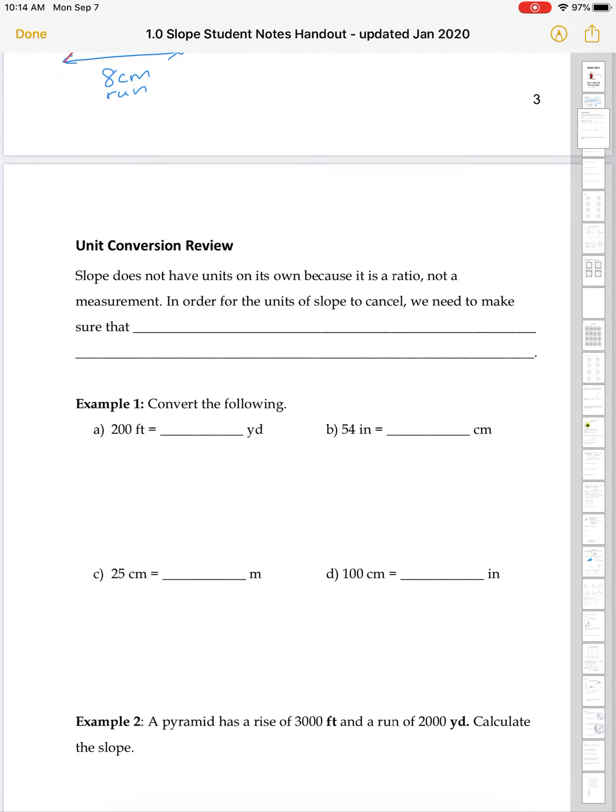So, unit conversion review. Slope doesn't have units on its own because it's a ratio, not a measurement. In order for the units of slope to cancel, we need to make sure that the rise and the run have the same units. So, you might have to do converting.